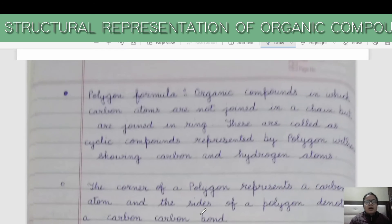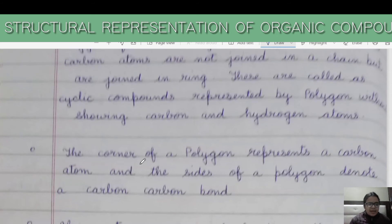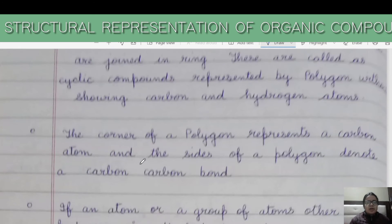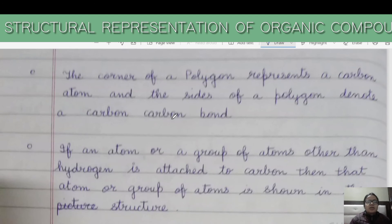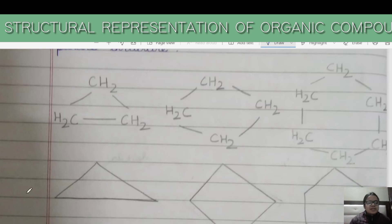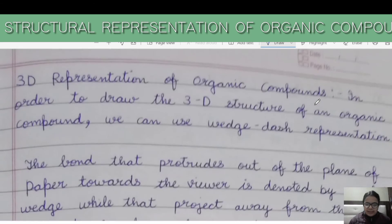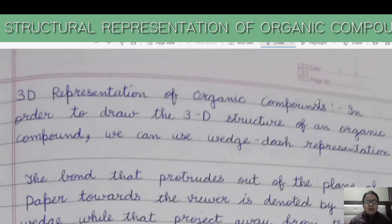The polygon formula is used for organic compounds in which carbon atoms are not joined in a chain but are joined in a ring — these are called cyclic compounds, represented by a polygon without showing carbon and hydrogen atoms. The corners of the polygon represent carbon atoms and the sides denote carbon-carbon bonds. If any atom or group other than hydrogen is attached to carbon, it is shown. Examples include cyclopropane, cyclobutane, and cyclohexane.